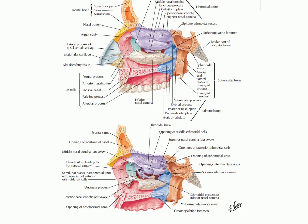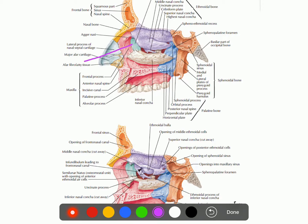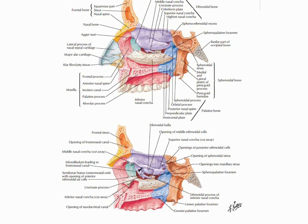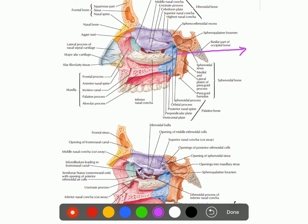This picture shows the articulation of the middle concha. Anteriorly it articulates with the ethmoidal crest of the frontal process of the maxilla, and posteriorly it articulates with the ethmoidal crest of the perpendicular plate of the palatine bone. The perpendicular plate of the palatine bone presents this crest, which is the ethmoidal crest of the perpendicular plate of the palatine bone.